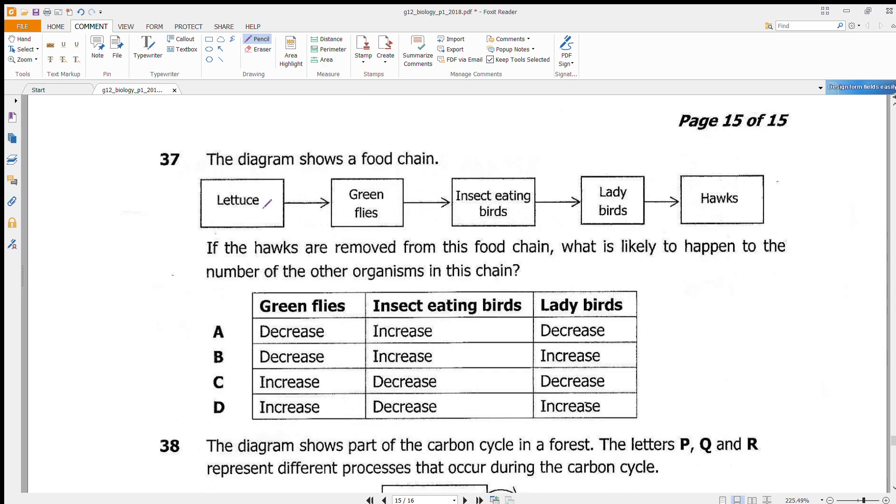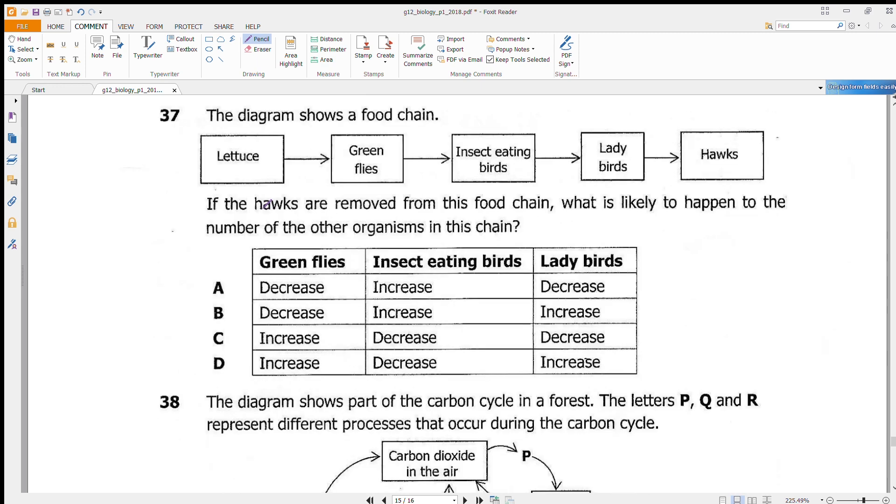Question 37: The diagram shows a food chain. If the hawks are removed from the food chain, what is likely to happen to the number of organisms? Once the hawks are removed, since no one is eating these guys here, they should increase. But because a lot of guys are eating these, so these ones should reduce. Once these reduce, then these also should increase because there's no one eating them. So ladybirds should increase, insect eating birds should decrease. Increase, decrease, yes. Then increase. Our answer is D.